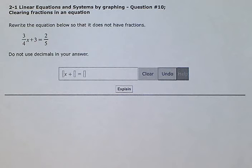Linear equations and systems by graphing, question number 10. Clearing fractions in an equation. Rewrite the equation below so that it does not have fractions. 3 over 4x plus 3 equals 2 over 5. Do not use decimals in your answers.